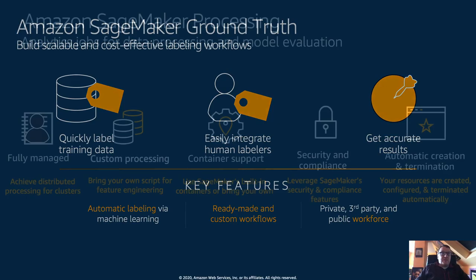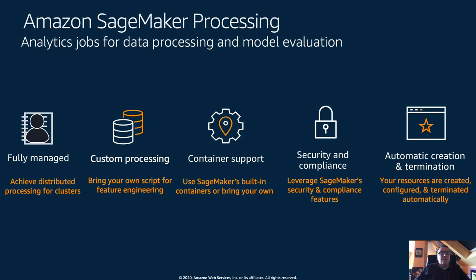Another way to prepare data is to run processing jobs. Maybe you need to run feature engineering, ETL tasks, or data cleaning. Real-life data is always messy and needs to be cleaned. Customers primarily use Scikit-learn and Spark to do this, so we added SageMaker Processing to make it very easy to run batch processing jobs on SageMaker using either Scikit-learn or Spark. You just provide your own code and use our containers or bring your own containers.